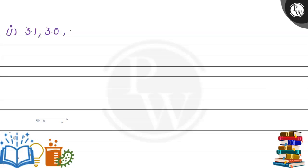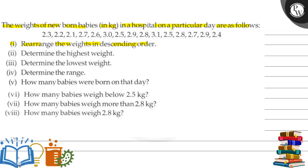In the first part, we need to rearrange the weights in descending order. First number is 3.1, which is the largest weight. Then 3.0, 2.9, 2.9, 2.8, 2.8, 2.8, 2.7, 2.7, 2.7, 2.6, 2.5, 2.5, 2.4, 2.3, 2.3, 2.2, and 2.1. This is the arrangement in descending order.